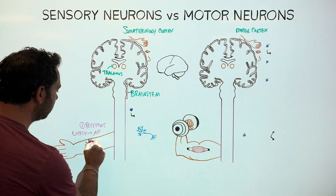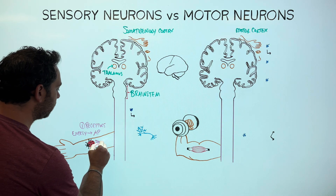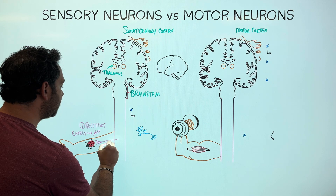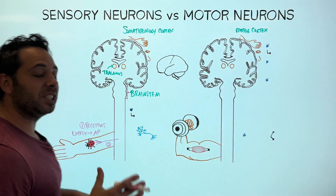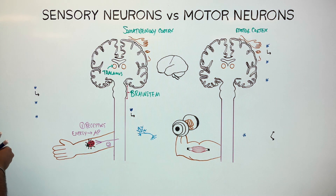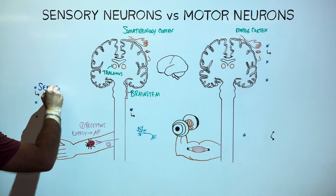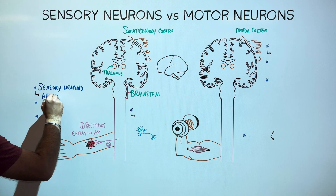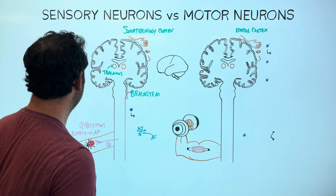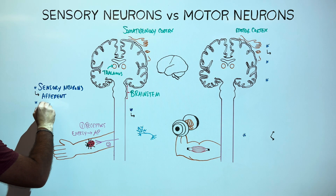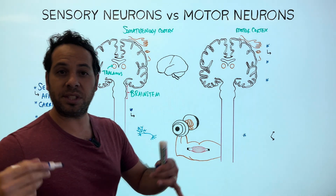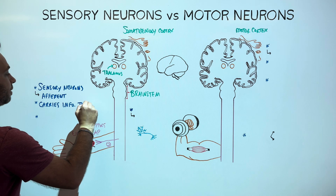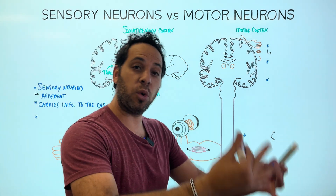Step number two: that signal travels via the sensory neuron to the spinal cord, taking that action potential to the central nervous system. Sensory neurons — another name you might see in a textbook — are also called afferent neurons. They carry information from the outside world (touch, cold, hot, spiky, smooth) to or toward the CNS.